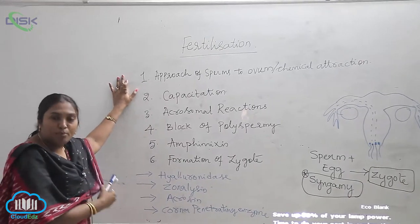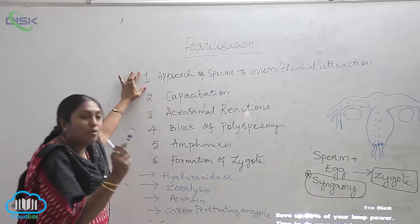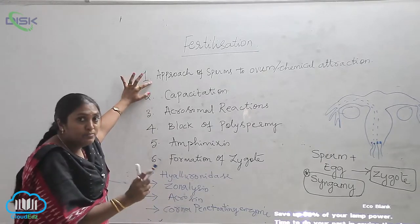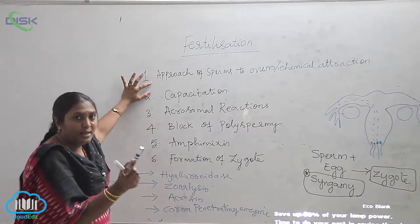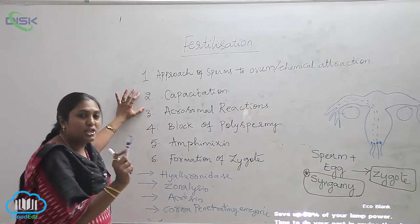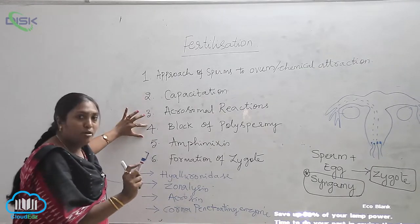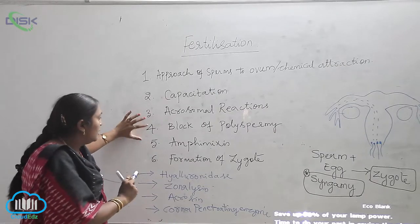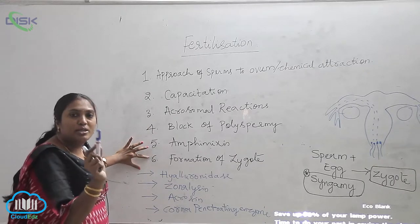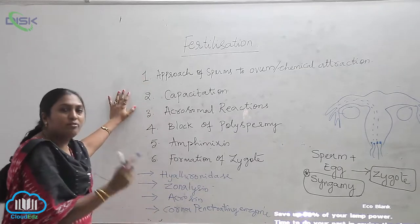The first step, very important and quite interesting, is the approach of sperms to the ovum, or chemical attraction. Second is capacitation. Next is the acrosomal reactions. Then block of polyspermy. Fifth is amphimixes. And the last one is the formation of zygote. Now let us discuss each and every one in detail.